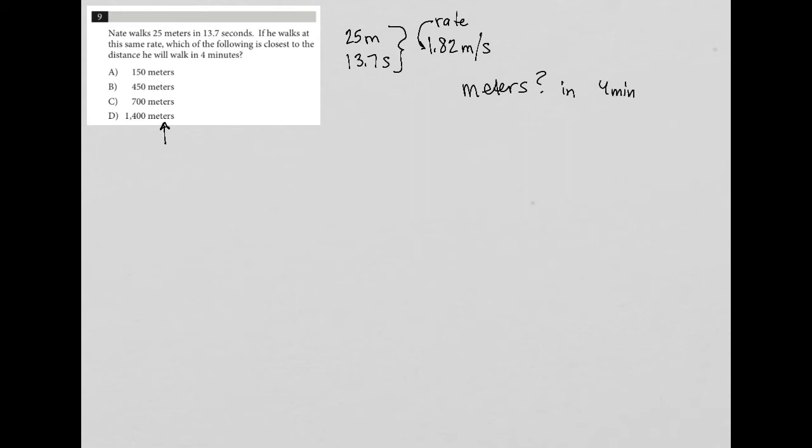So anytime I see a question like this, I always start off with thinking about this through a unit analysis type of idea, which means I want to start off with the units that I'm given. So four minutes is the amount of time, and I want to convert this to meters somehow. How do I get from four minutes to meters?